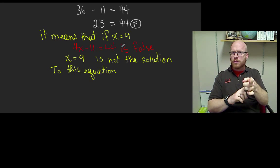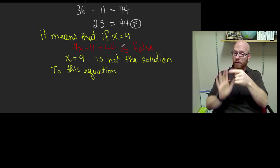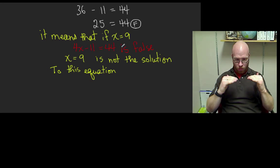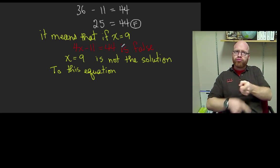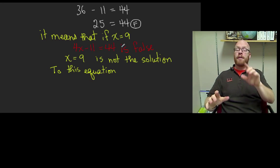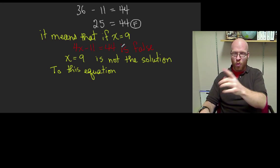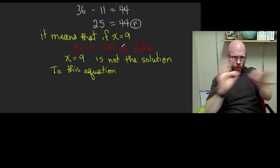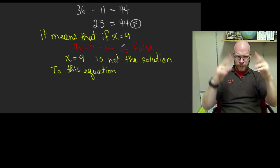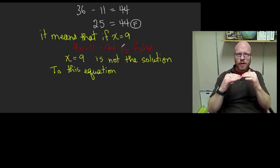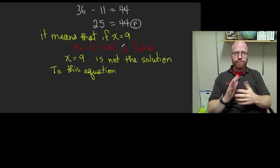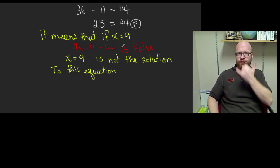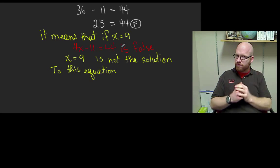This principle works for all equations. If you have a variable, replace the variable with the number you found. When the two sides are equal, it's true. If you believe you have the answer and you replace it for the variable and work down and it's false, that means your answer is incorrect or your check was done improperly. Either way, you have to go back and check your work.